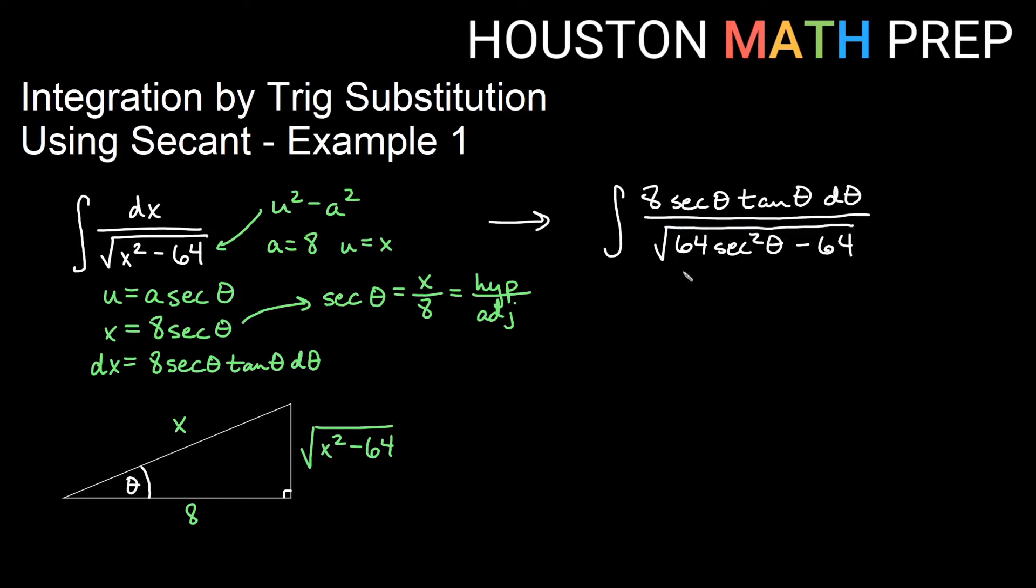And what you're supposed to see here is that this is a constant multiple of the Pythagorean identity that we were looking for. So I'll bump my 8 out front from the top, leave my secant theta tan theta d theta in there. And then if we think about factoring out a 64,